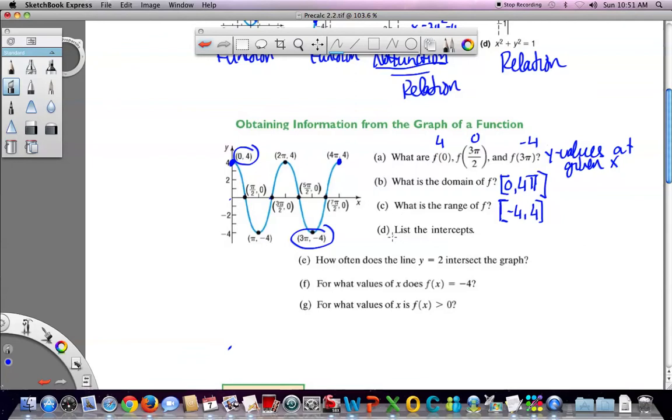List the intercepts. The x-intercepts are at π/2, 3π/2, 5π/2, and 7π/2. And the y-intercept is at four. And you can write it this way if it says list the intercepts. You could write the intercepts in ordered pair notation. It doesn't matter.